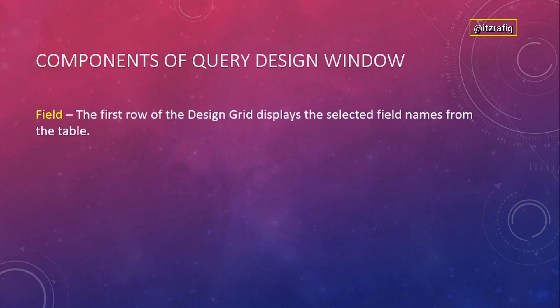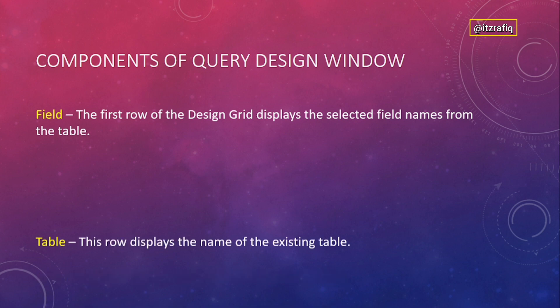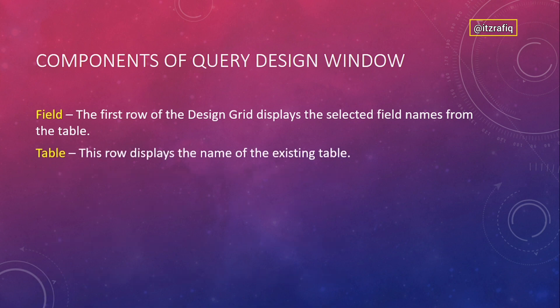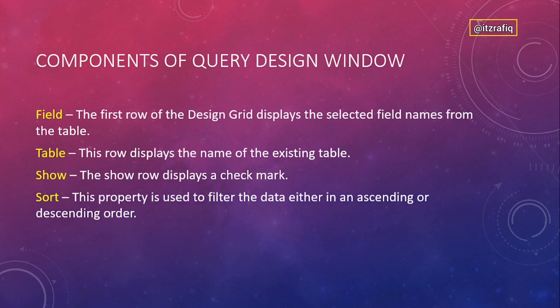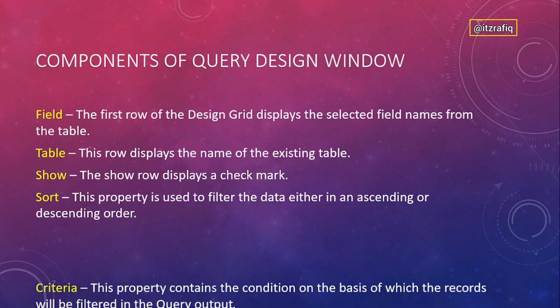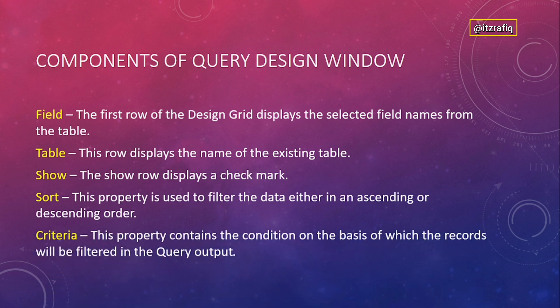Components of the Query Design window: Field — where you see the field names; Table — where you see the table names; Show — a checkbox to show or hide a particular field; Sort — to sort data in ascending or descending order; Criteria — where you write conditions to filter and retrieve specific records from a table.